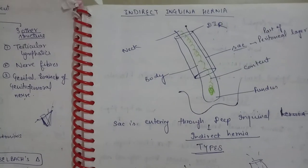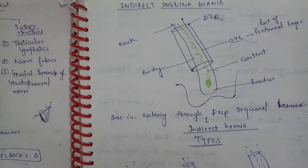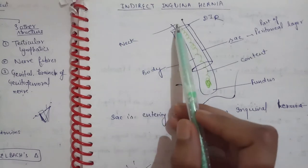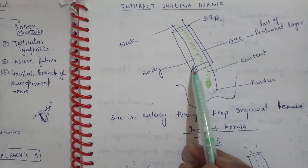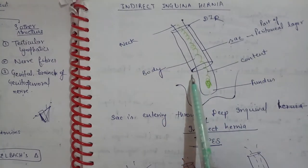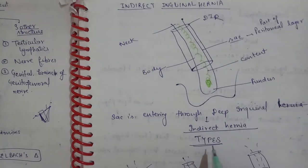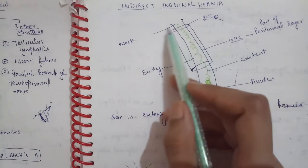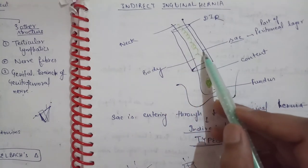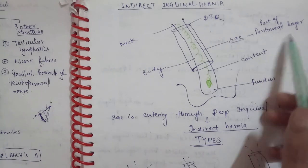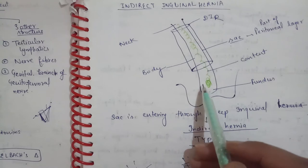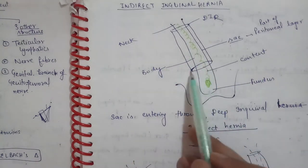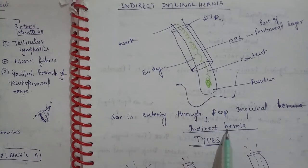Inguinal hernia has two types: direct and indirect. Indirect means the sac passes through the deep inguinal ring, traverses the inguinal canal, and enters the scrotum. The hernia sac has parts: the neck, which is the constricted area, then the body, then the fundus. In indirect hernia, the sac enters at the deep inguinal ring.